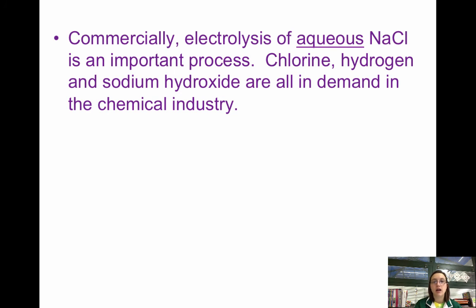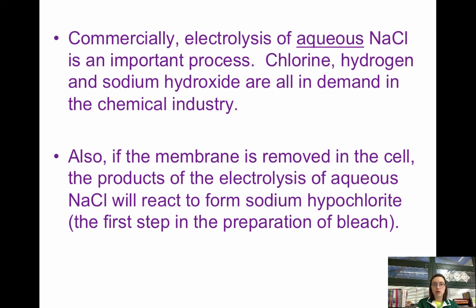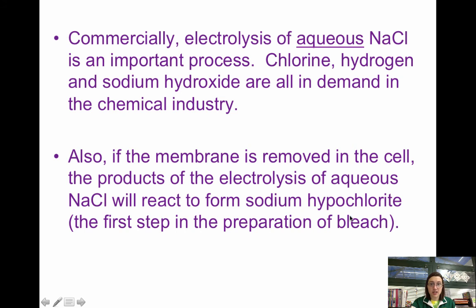In industry, electrolysis of aqueous NaCl is very important because chlorine, hydrogen, and sodium hydroxide are all in high demand in the chemical industry — and these are the products of the electrolysis of aqueous NaCl. If the semi-permeable membrane is removed from the cell, the products will form sodium hypochlorite, which is the first step in the preparation of bleach. This shows that electrolysis is very important, allowing sodium hydroxide to be inexpensive, hydrogen gas to be produced, and bleach to be cheap.